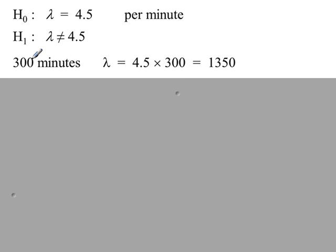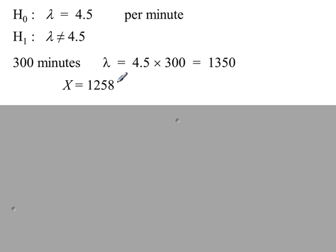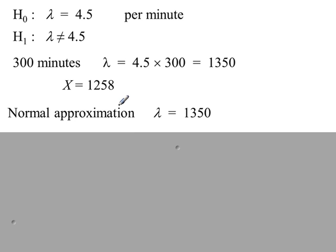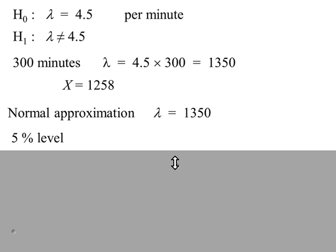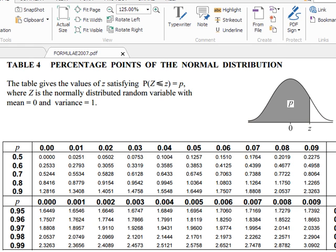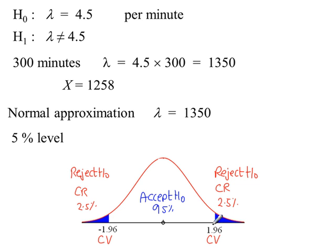So modifying the value of lambda for a one-minute interval, 4.5. For 300 minutes it would be 1,350. This is our new value. We have our evidence, 1,258. Because lambda is more than 10, a normal approximation is justified. Using a 5% significance level and a two-tail test, we have 95% in the centre or 0.95. And in the tails we have 2.5%. The cumulative probability to the left of this line is 97.5%. So we look up p equals 0.975 from the normal tables. 0.975 gives a z value of 1.96. So we have plus and minus 1.96.